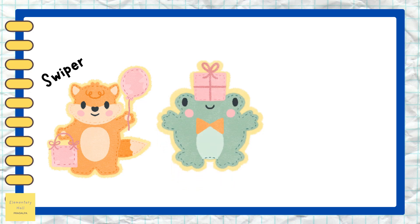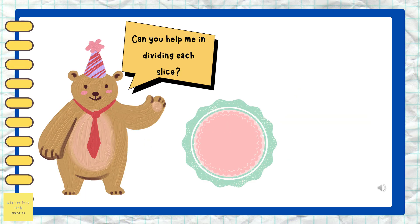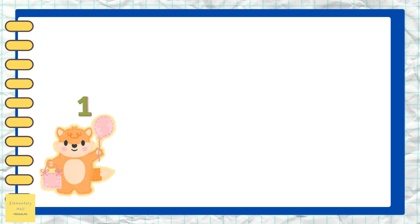Hopper the Frog, and Quacker the Duck. Mr. Brown Bear wanted to slice his birthday cake equally and share it with his friends, so that no one will be treated unfair. Shall we help him divide each slice equally for all his friends?